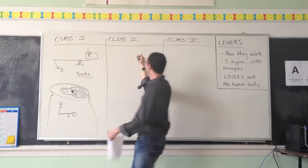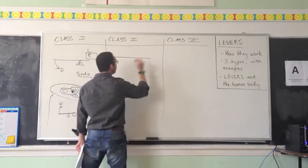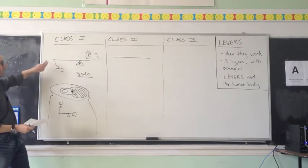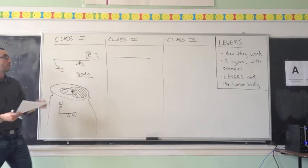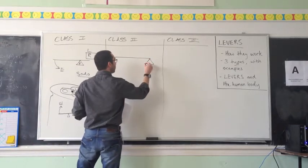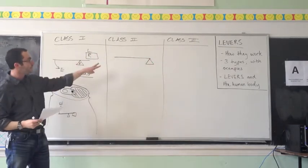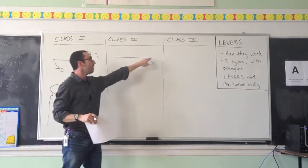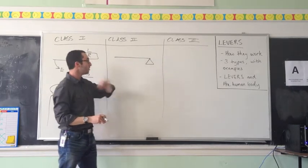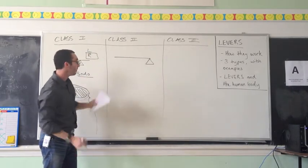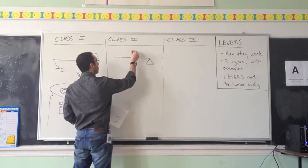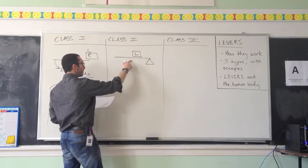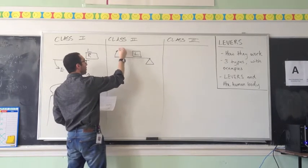Moving on to the class two lever. Again, we have our beam, and we're going to put the fulcrum at the very tip of the beam. You might think of a lever as a seesaw, but we can still use it. In a class two lever, the load or resistance is somewhere in the middle of the lever, and on the other end is the effort that we apply to do the work.